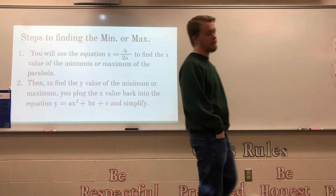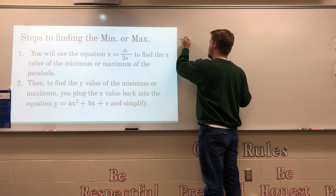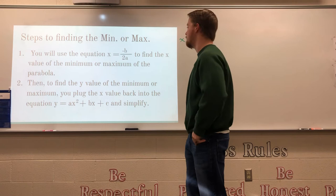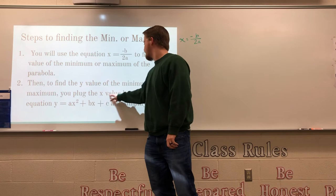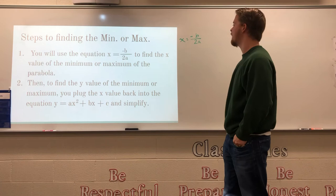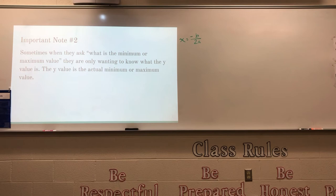Here are the steps to finding the minimum or maximum of a quadratic equation. First, use the formula x equals negative b over 2a to find the x value of the minimum or maximum. But we don't stop there — we then plug that x value back into the equation y equals ax squared plus bx plus c and simplify to find the y value.